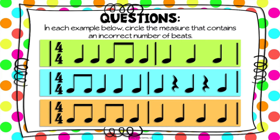The correct answer was the second measure. If we look at the first measure, I see quarter note, quarter note, two eighth notes, and a quarter note — so I count one, two, three, four. We got the right number of beats. But if we look at the second measure, we only have three quarter notes, so we're missing that fourth beat.